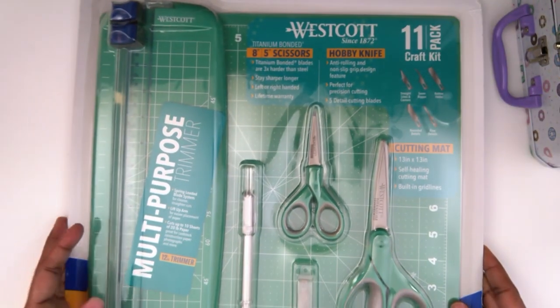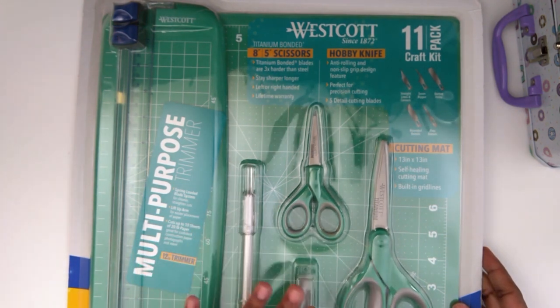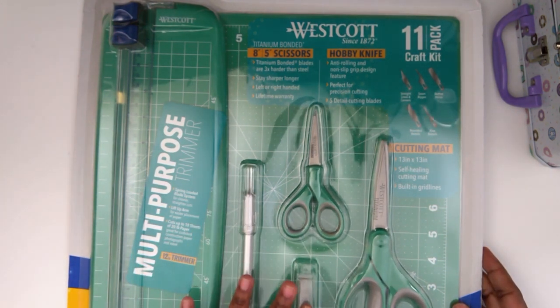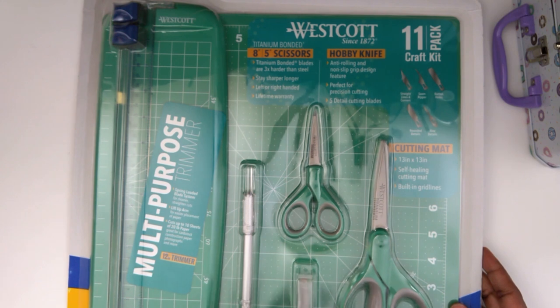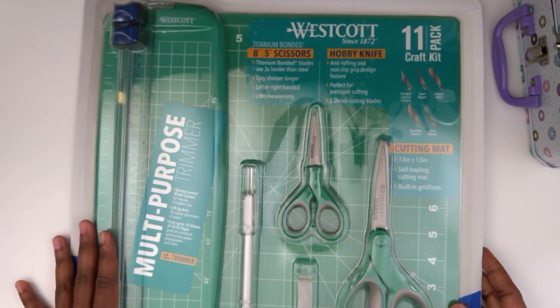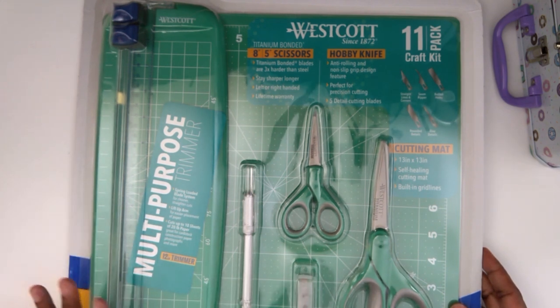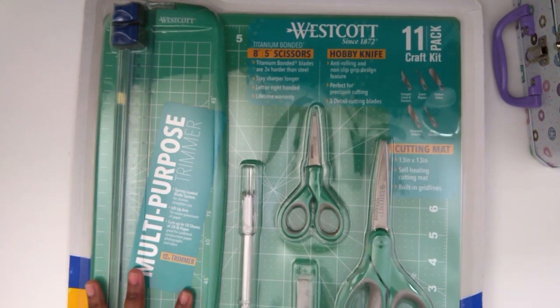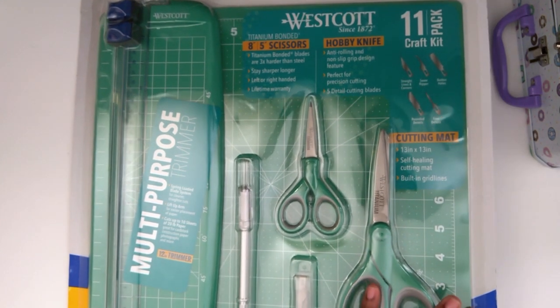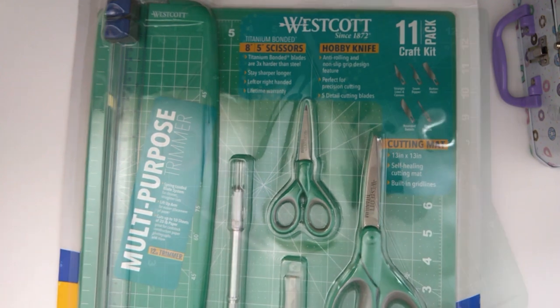It's 11 pieces. It has two pairs of scissors, a craft knife with some other blades to go with the craft knife, a cutting mat, and then it also has the paper trimmer. So I'm going to go ahead and open this baby up. I've had it for like two weeks now, I just haven't bothered with it.